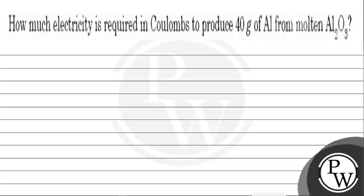Hello children, so let's read this question: how much electricity is required in Coulombs to produce 40 grams of Al from molten Al2O3?